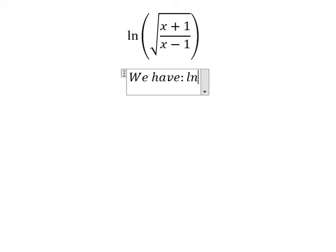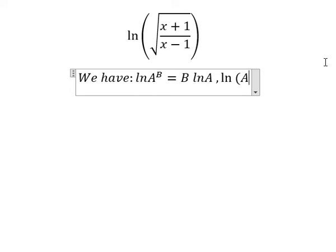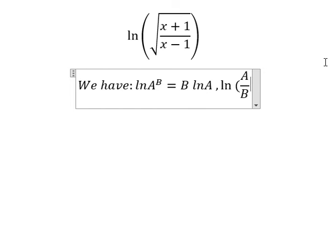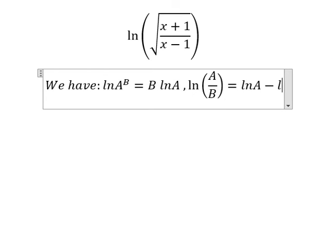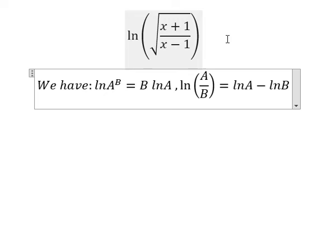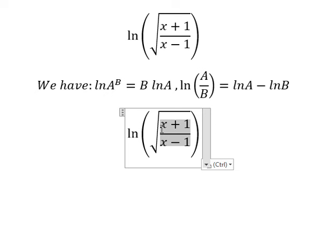We have ln A to the power of B equals B ln A, and ln of A over B equals ln A minus ln B. The square root is about 1 over 2.